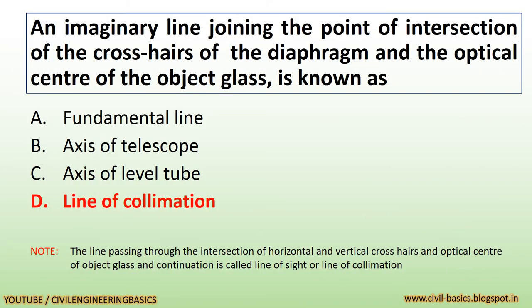An imaginary line joining the point of intersection of the crosshairs of the diaphragm and the optical center of the object glass is known as line of collimation. Note: the line passing through the intersection of horizontal and vertical crosshairs and the optical center of the object glass and its continuation is called line of sight or line of collimation.